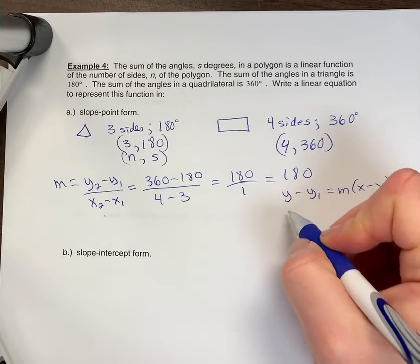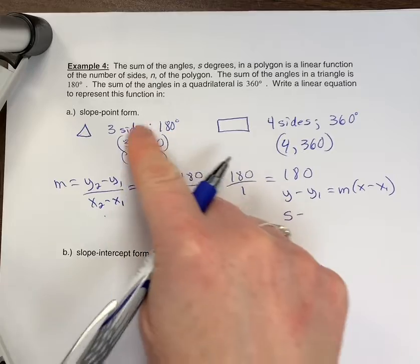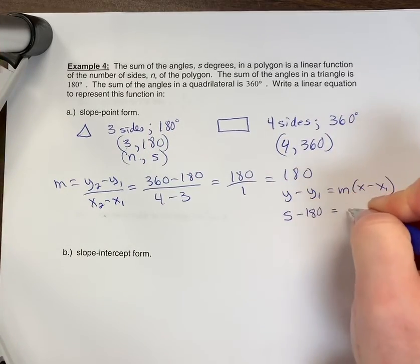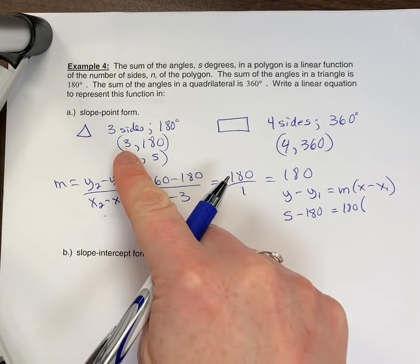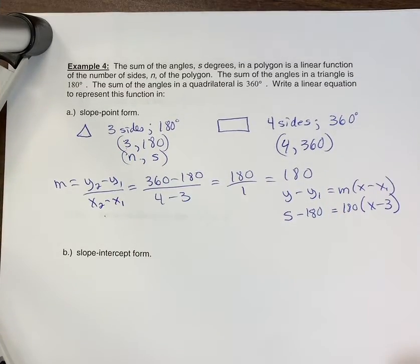So my equation would be S minus, let's say I'm using this point, Y coordinate is 180, equals M. My slope is 180, and my X minus 3. Close the brackets, okay?